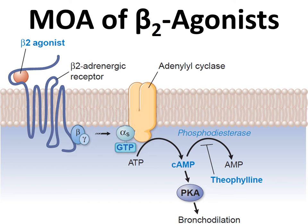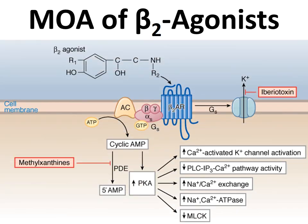As discussed in the autonomic nervous system, the downstream pathway involves protein kinase A activation, calcium-activated potassium channel activation, decreased phospholipase C and IP3-calcium signaling, and ultimately inhibition of myosin light chain kinase (MLCK) leading to smooth muscle relaxation.